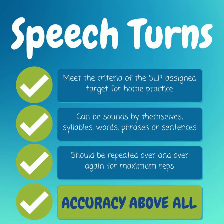If you don't know what that is, check in with your child's SLP. Speech turns can be sounds by themselves, syllables, words, phrases, or sentences. They should be repeated over and over again to get maximum reps so that you're actually getting some effective practice in, and accuracy above all. If what your child is saying when you're practicing is not correct and doesn't sound like the target and you're correcting them most of the time, then you need to change the activity, change your expectations. Speak to your child's SLP and find out what you need to do — don't continue to practice in those situations.